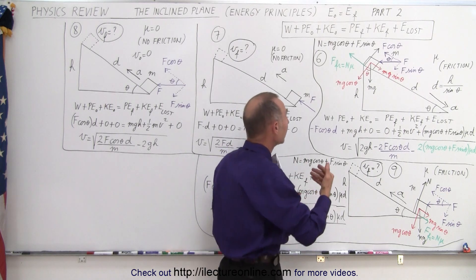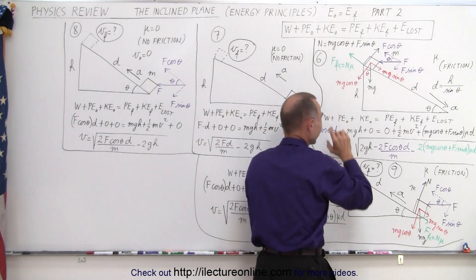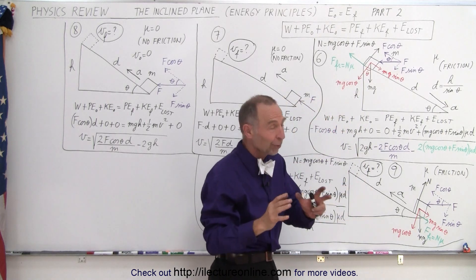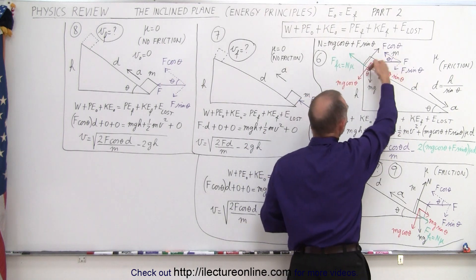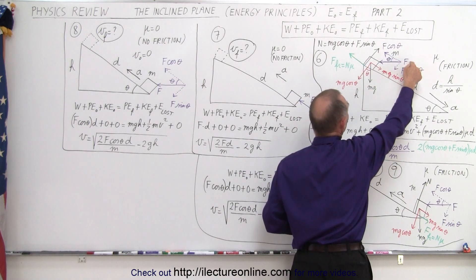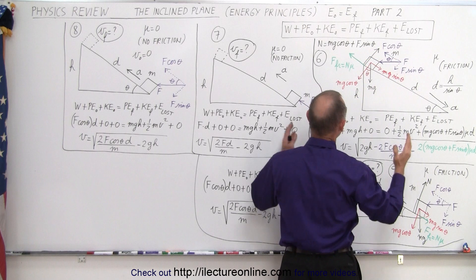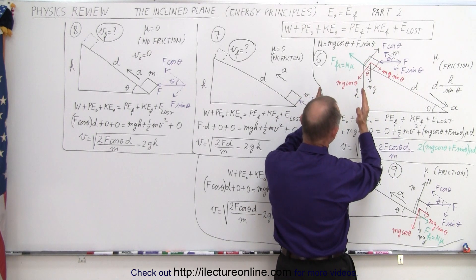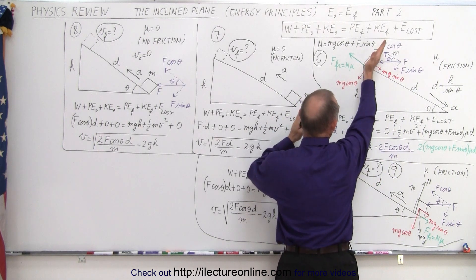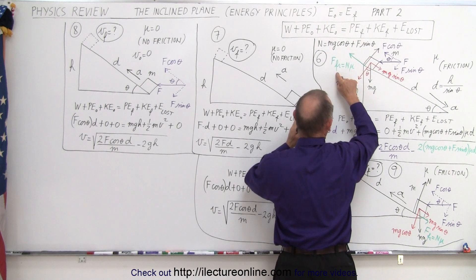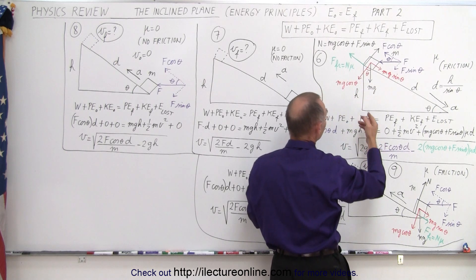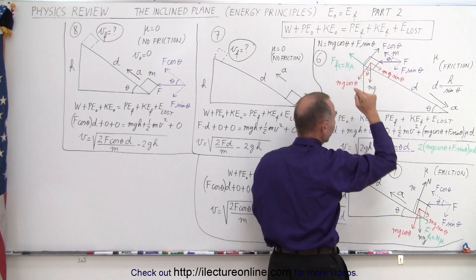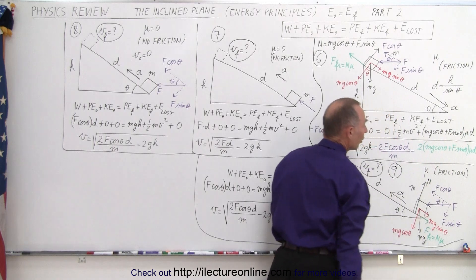The friction force equals the normal force times mu. The normal force is the sum of the mg cosine theta component and the perpendicular component of the force, which is f sine theta. So those two forces together are counteracted by the normal force, making the normal force equal to their sum. The friction force is then those two terms times mu, and the work done by friction is normal force times mu times distance.